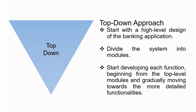For example, we are looking into developing a banking application. If we are using the top-down approach, then we will start with a high-level design of the banking application where we look into what are the essential modules or components required. For banking applications, we need to have, for example, transaction processing and account management. These are the essential modules, and then from this model we slowly break it down into specific functions.